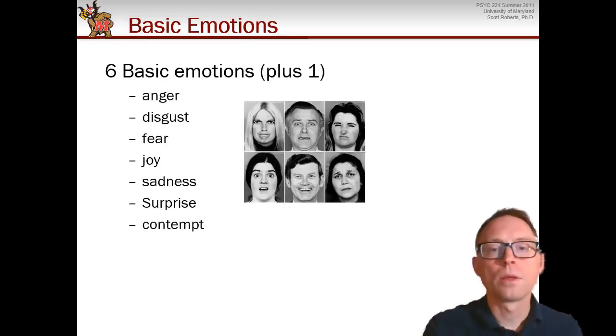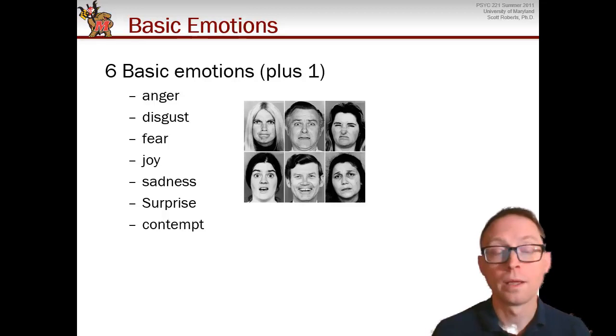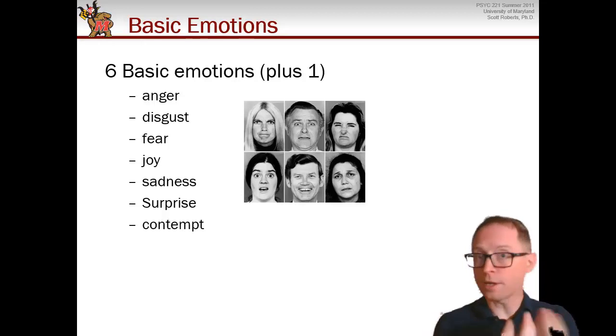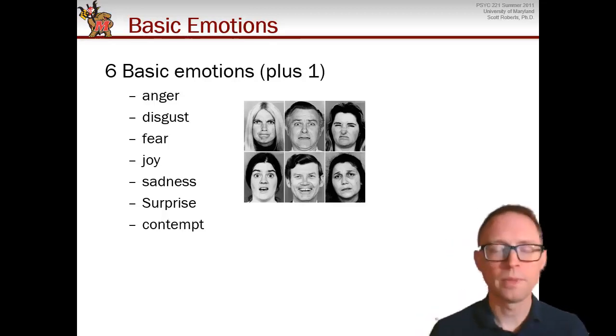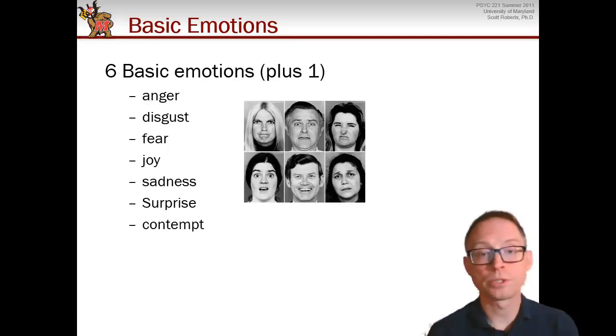Over time, they did this study several different times in different with different people, and they added one extra one. And that was contempt. They found that actually contempt was also recognized visually by people who had no experience with Western culture. Now, the reason why this is such a big deal is because if you can recognize these basic emotions, that means that they had to have come through your genes. They had to be instinct. They couldn't be learned because these people had never interacted with Western culture.